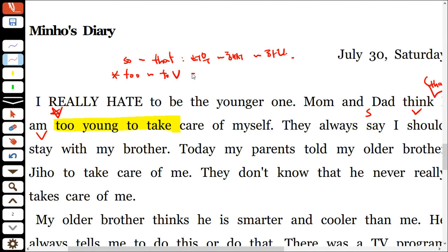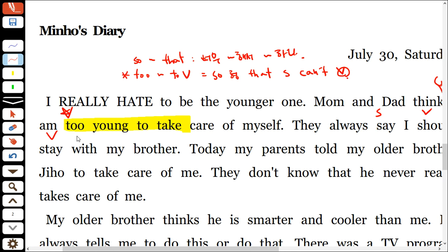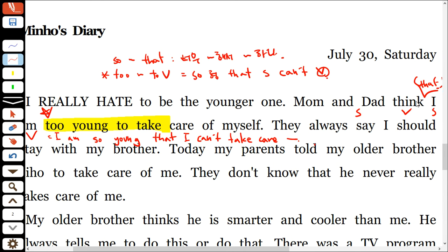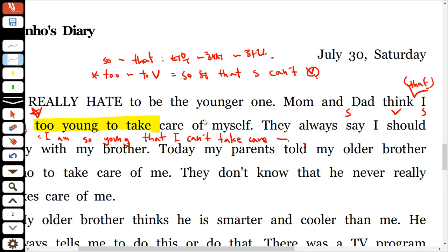too...to부정사는 'so 형용사 that 주어 can't 동사원형'으로 바꿀 수 있어요. 바꿔보면 'I am too young to take care of myself'는 'I am so young that I can't take care of myself'가 돼요. 칸 수에 맞춰 쓰는 문제가 나올 수 있기 때문에 이 부분은 꼭 암기해 놓으세요.